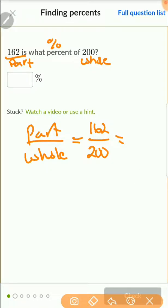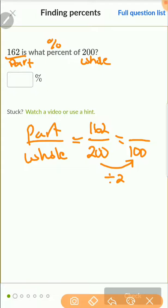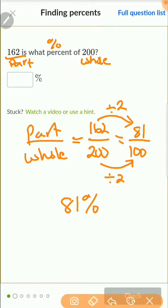A percentage is also a part-to-whole relationship, but the whole is always 100. So I put 100 at the bottom and look for the missing number on top. To get from 200 to 100, I divide by 2 — this is really just solving equivalent fractions. So I divide 162 by 2 as well. 162 divided by 2 is 81.